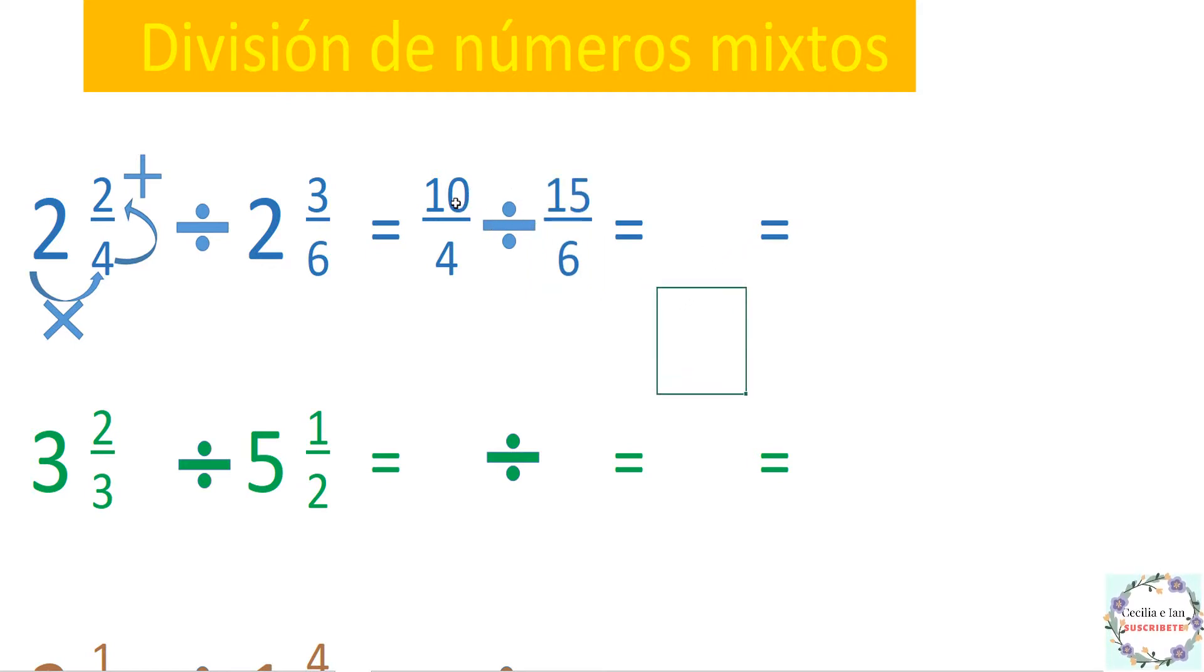Ahora vamos a multiplicar el 10 por el 6 y el resultado lo vamos a poner aquí arriba: 10 por 6 son 60, lo ponemos aquí. Ahora multiplicamos el 4 por el 15: 4 por 15 también son 60. Ahora 60 sobre 60 nos da 1 y aquí ya tenemos el primer resultado.